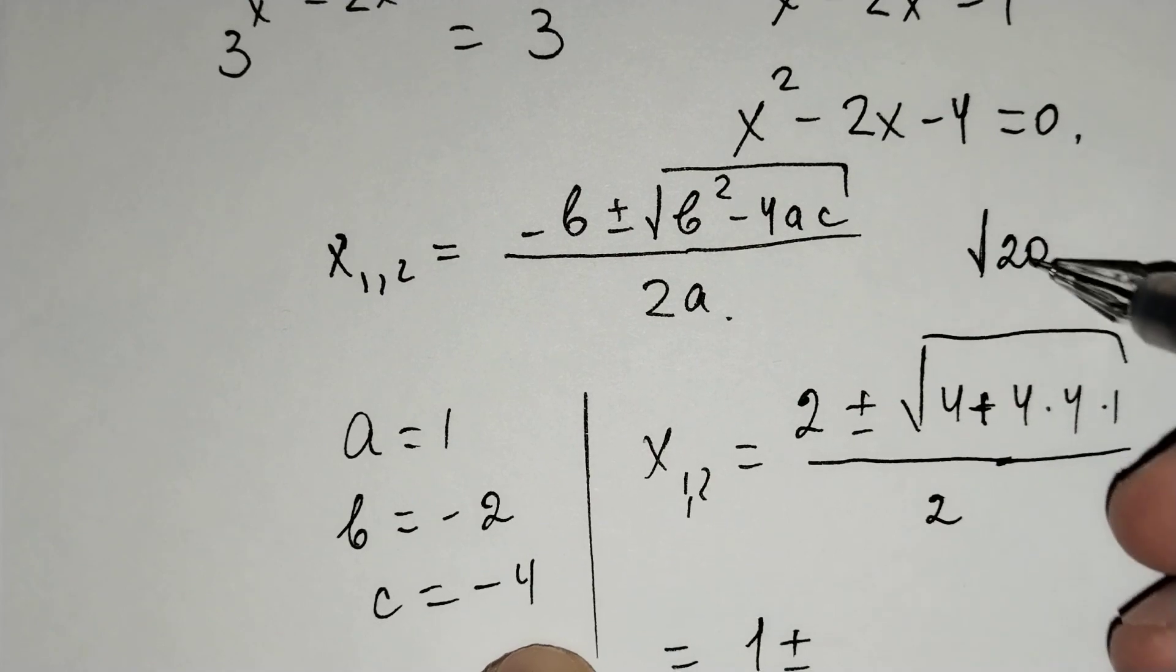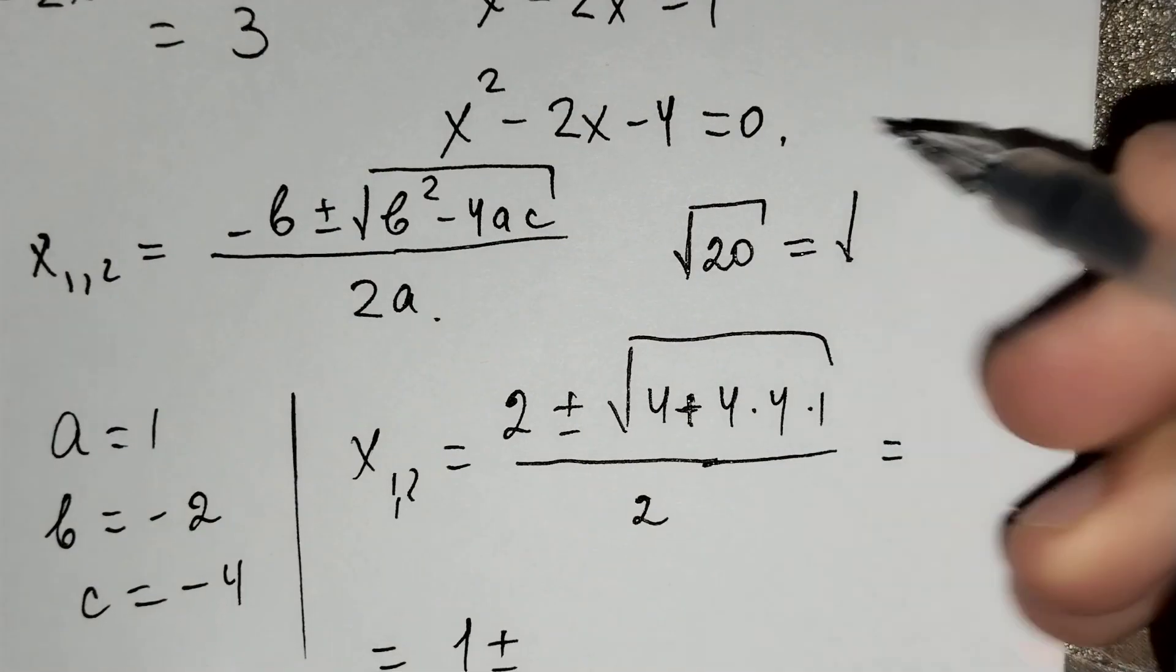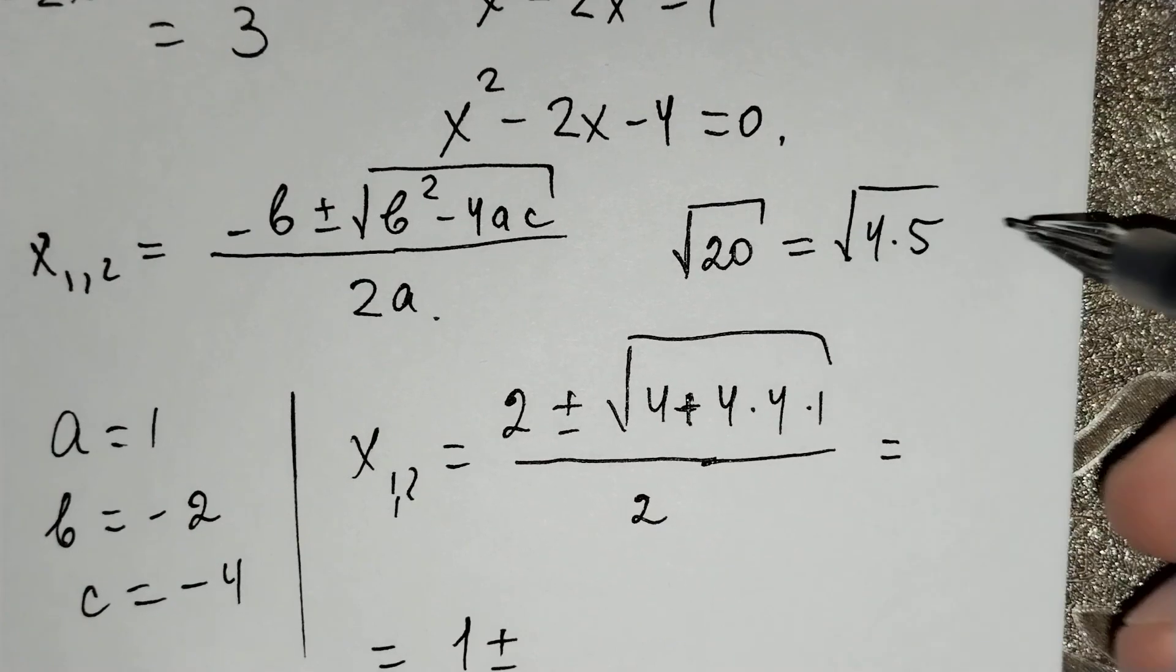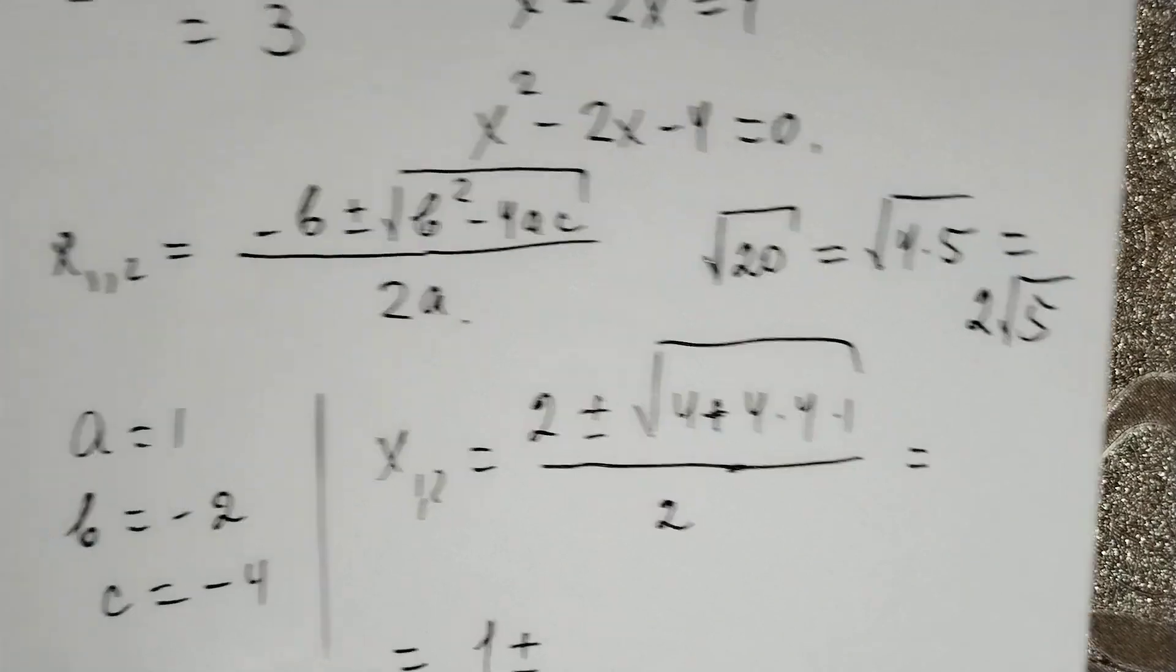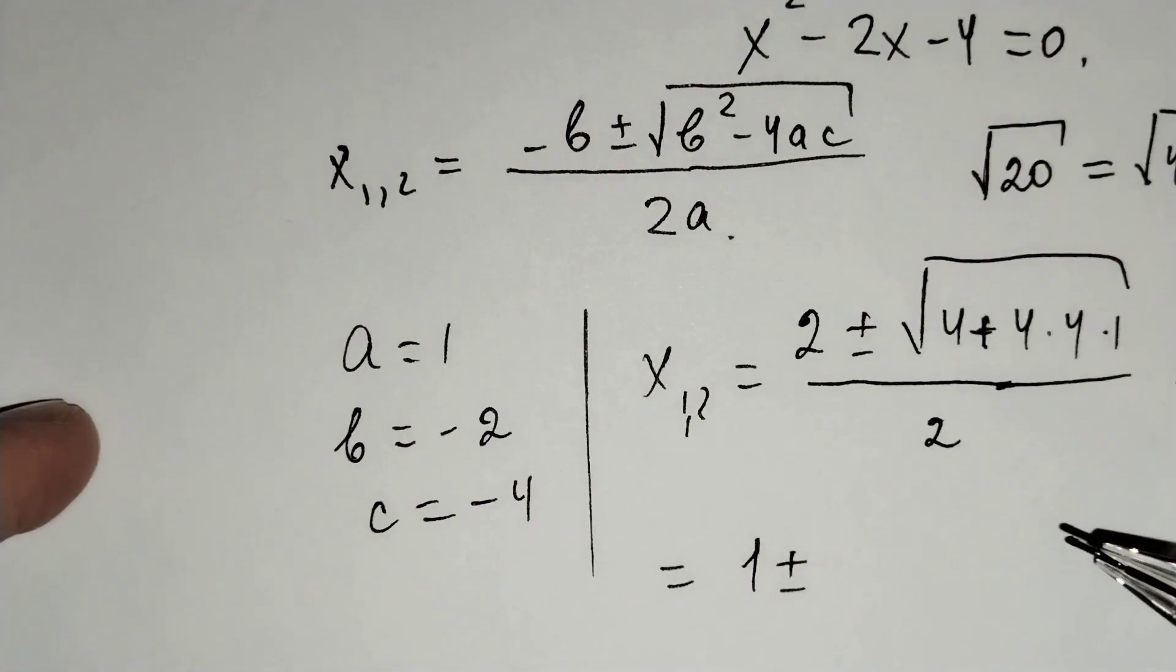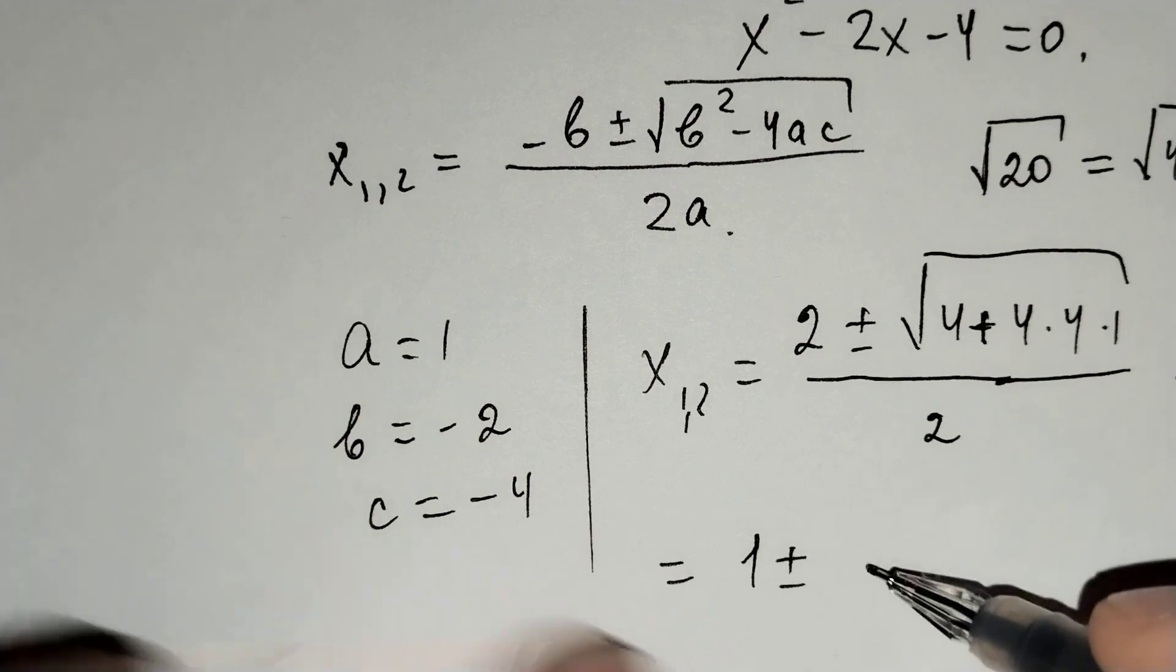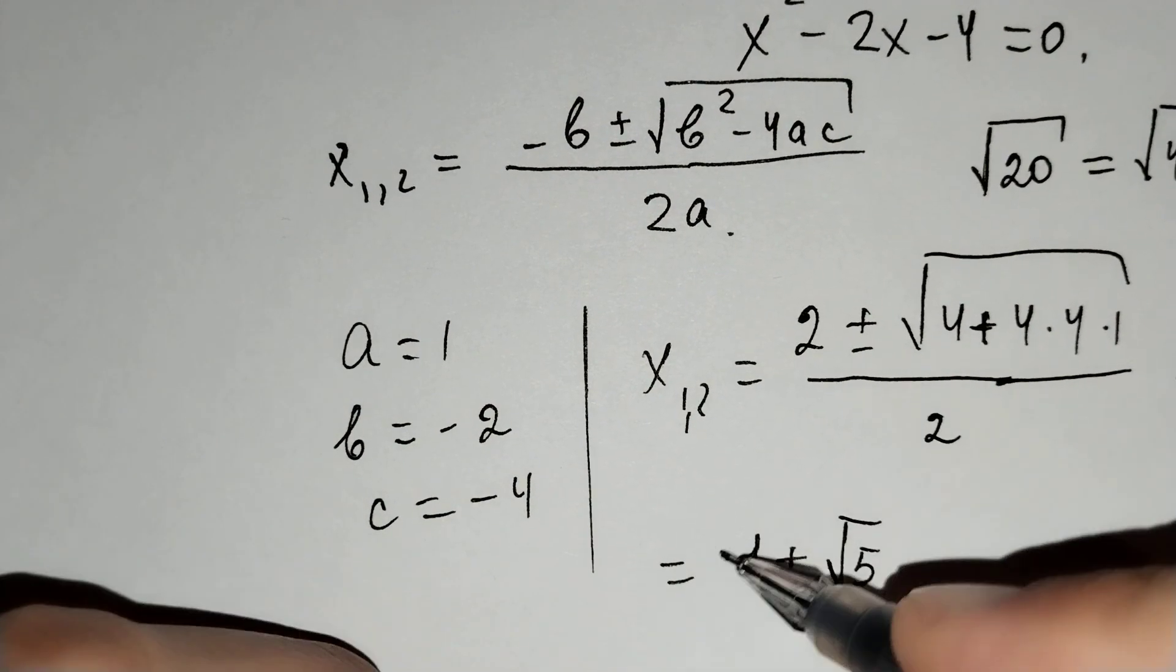The square root of 20 equals the square root of 4 times 5, and this is equal to 2 times square root of 5. And if we divide by 2, 1 plus minus square root of 5 remains.